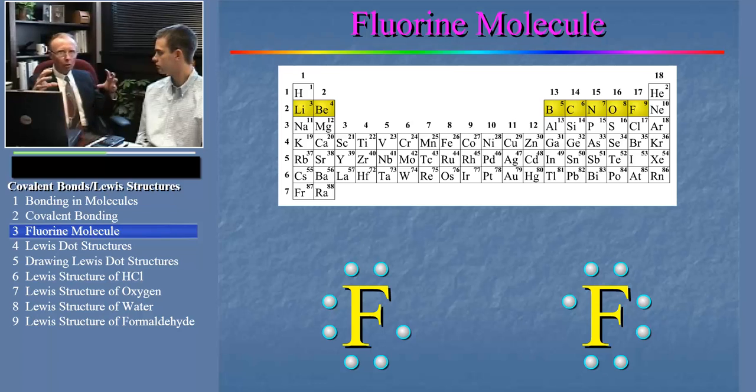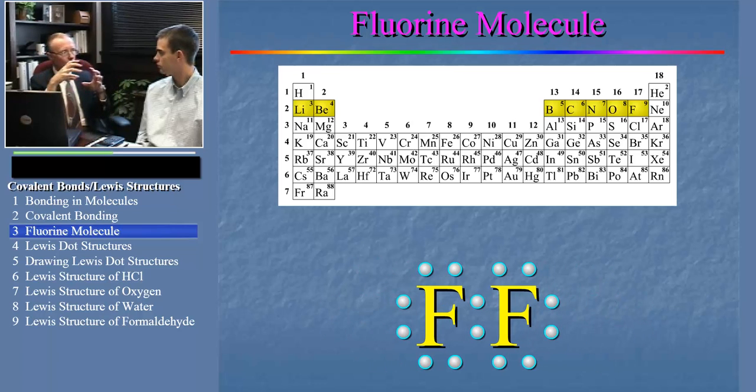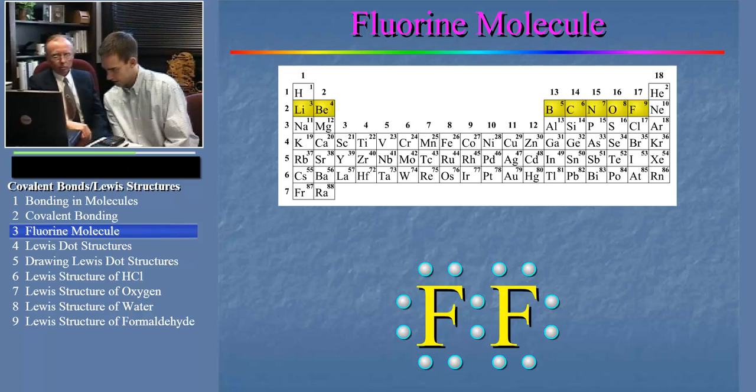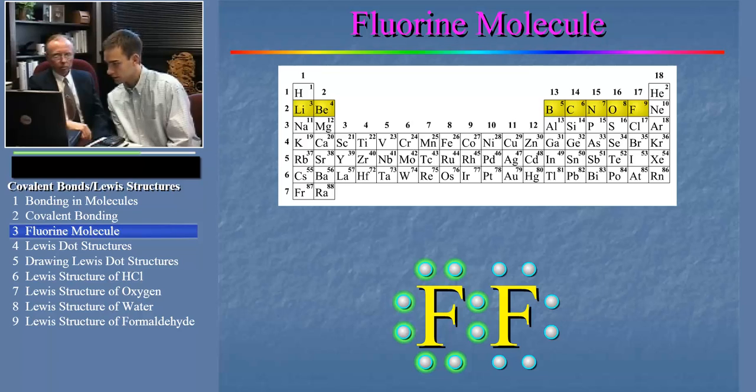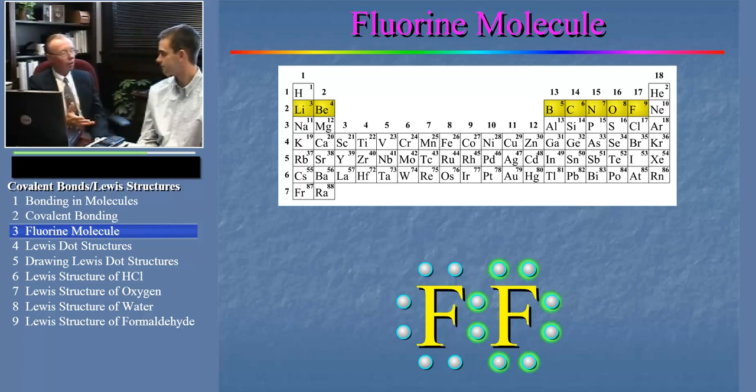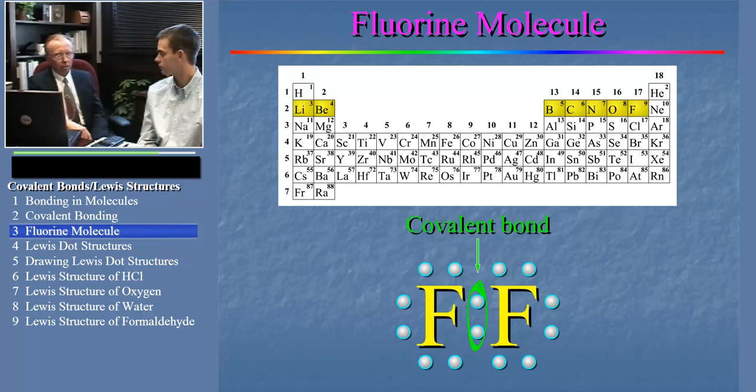Now, if we bring those two fluorine atoms together, they could share an electron like this. And now each thinks it has its octet. Do you want to check that? Sure. The first fluorine has eight electrons, and the second fluorine also has eight. That's right. Each now thinks it has eight. And this is how a covalent bond occurs. The two fluorine atoms associate with one another to share two electrons so that each can satisfy the octet rule. And these two shared electrons form what we call a covalent bond.